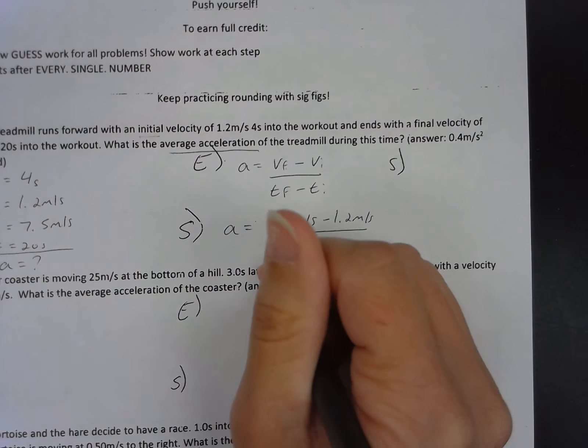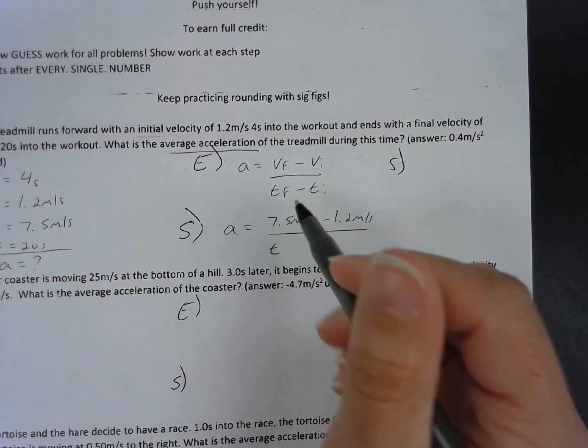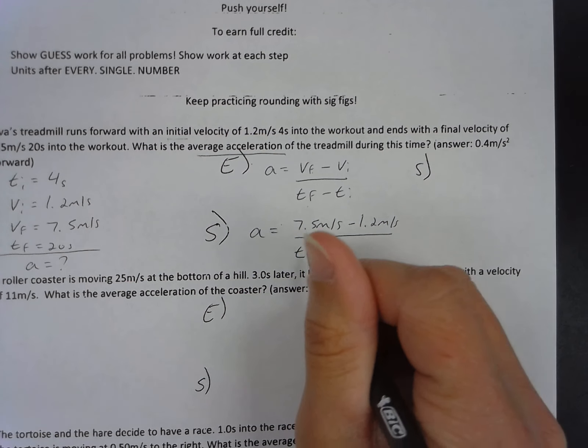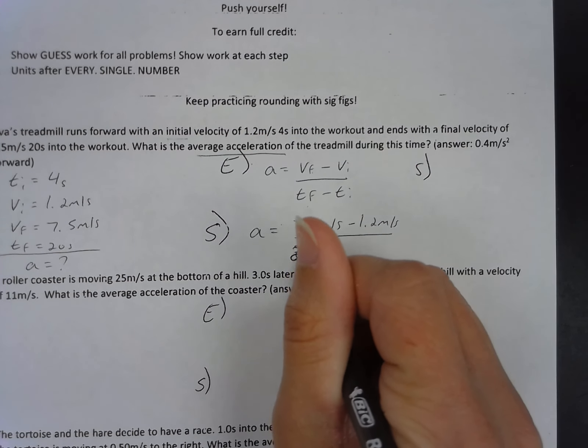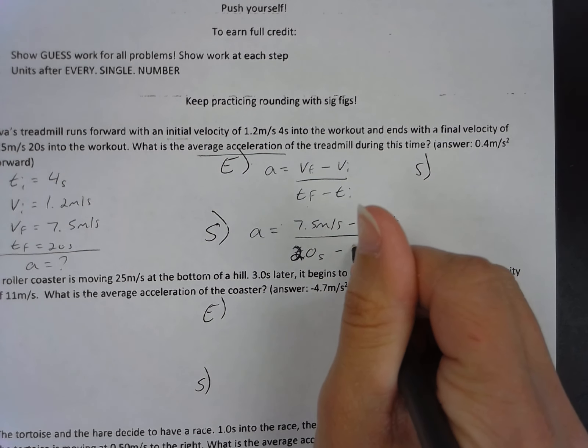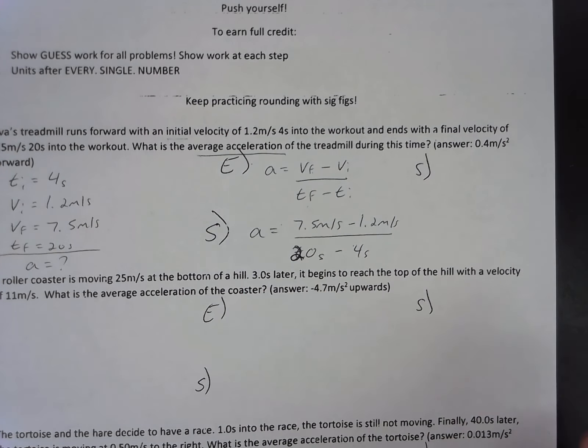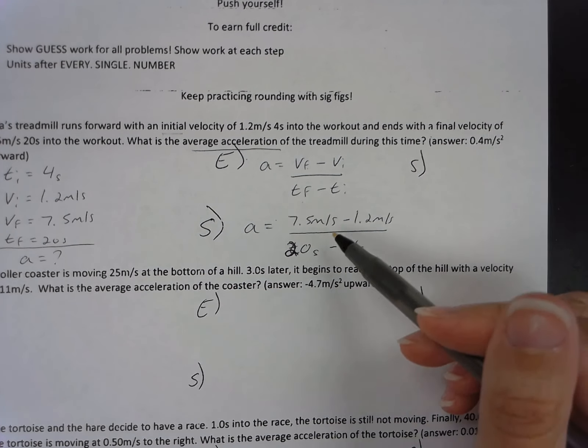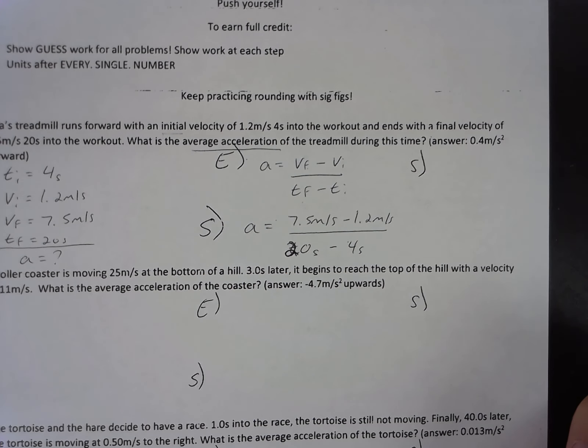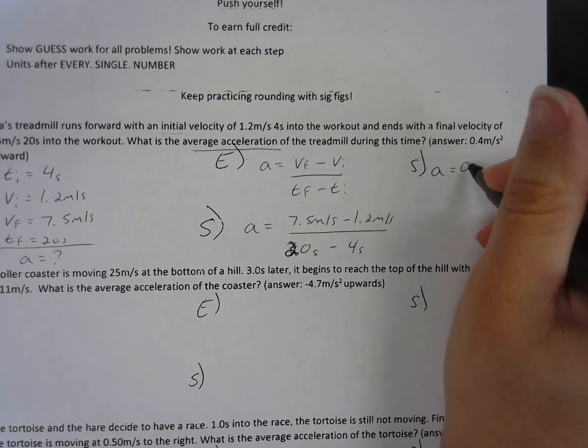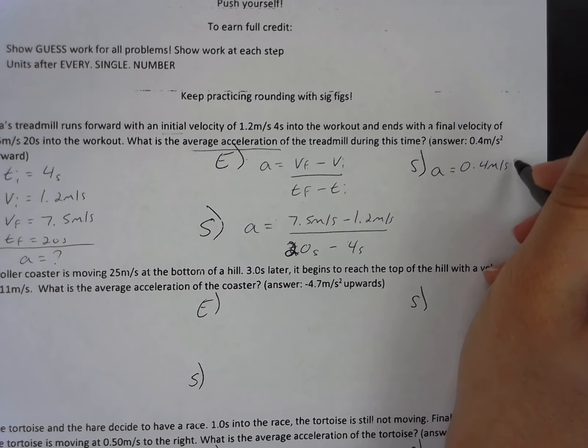All over my final time, Tf. So if I look over here, that was 20 seconds. Oops, started writing final time. Sorry about that. So I have 20 seconds here. Minus 4 seconds. So 7.5 minus 1.2 over 20 minus 4. So when I subtract those out, I should get as my answer 0.4 meters per second squared.